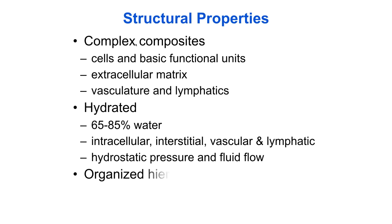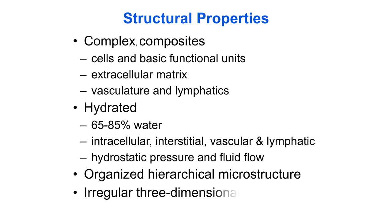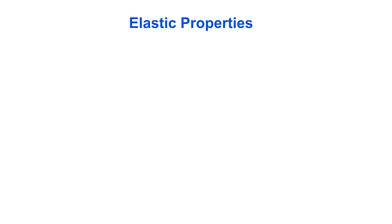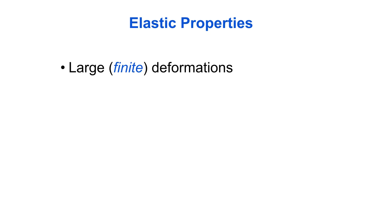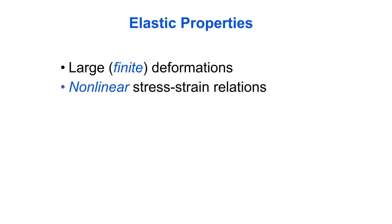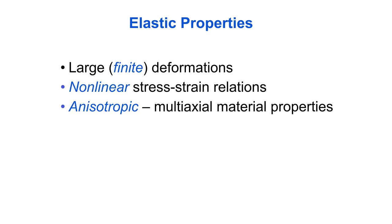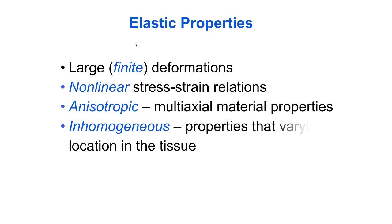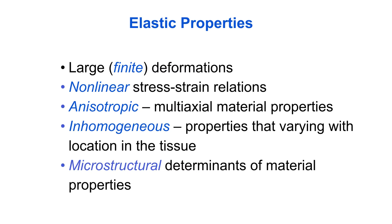Soft tissues have an organized hierarchical microstructure, irregular three-dimensional geometry, and in general, because of these things, they are difficult to test. Many of the mechanical properties of soft tissues can be described and modeled within the framework of elasticity theory. They include large finite deformations, non-linear stress-strain relations, anisotropy, inhomogeneity, and mechanical properties determined by microstructure.